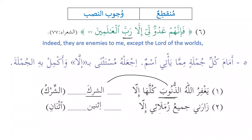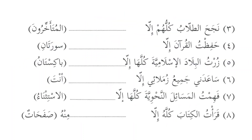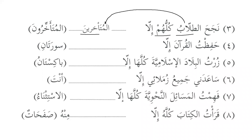'All of my classmates visited me except for two' — same idea as the first example. 'All the students succeeded except for the late comers' — again the same pattern. 'Ittaqin' is used for emphasis and the late-coming students are mentioned. Since it is tamun, muttasilun and mujabun, it has to be mansoob.